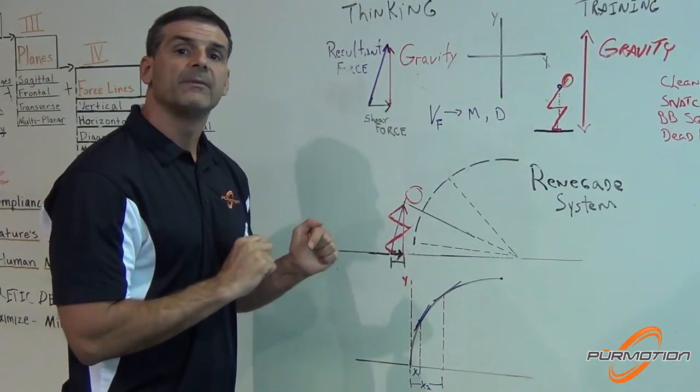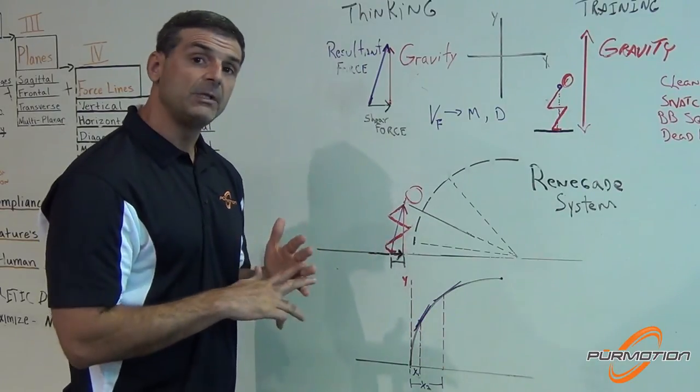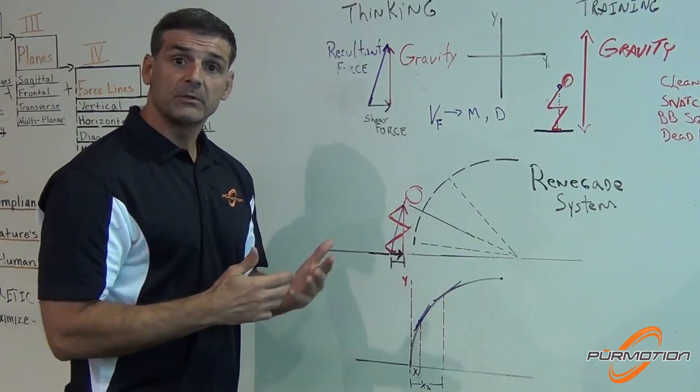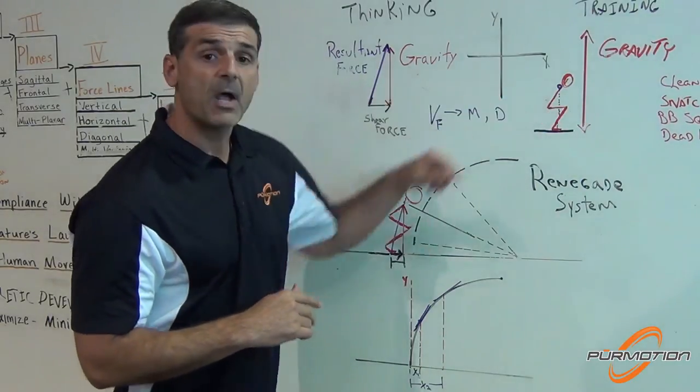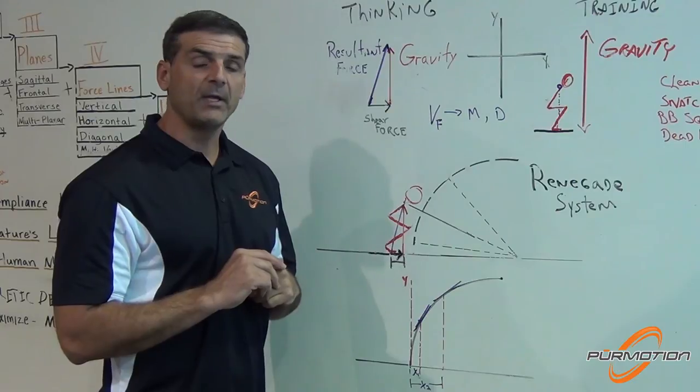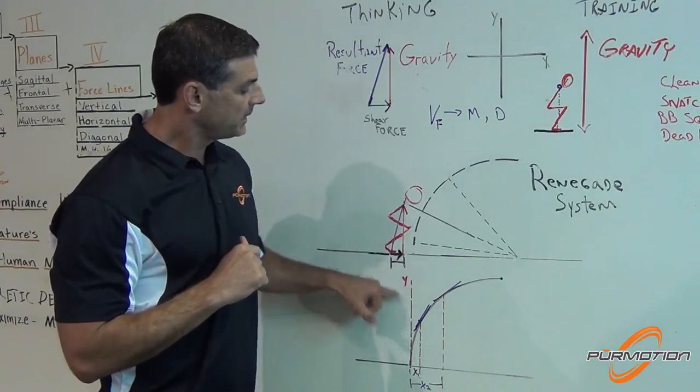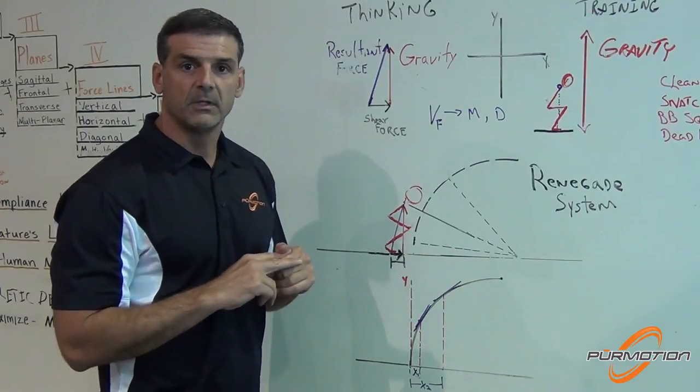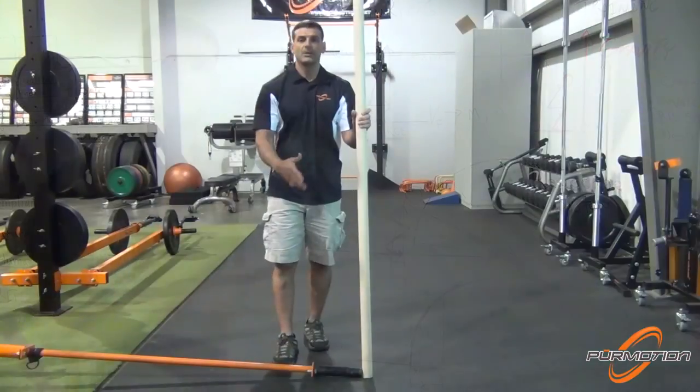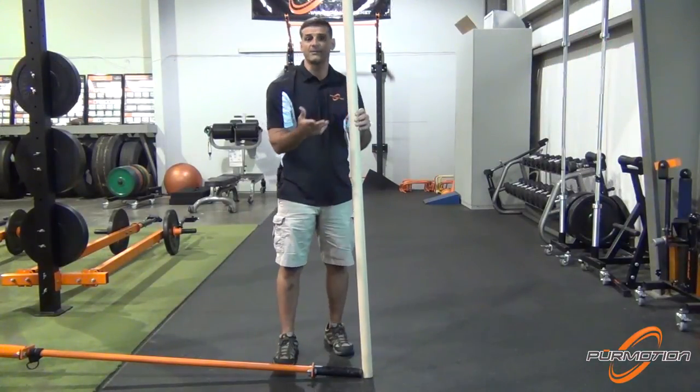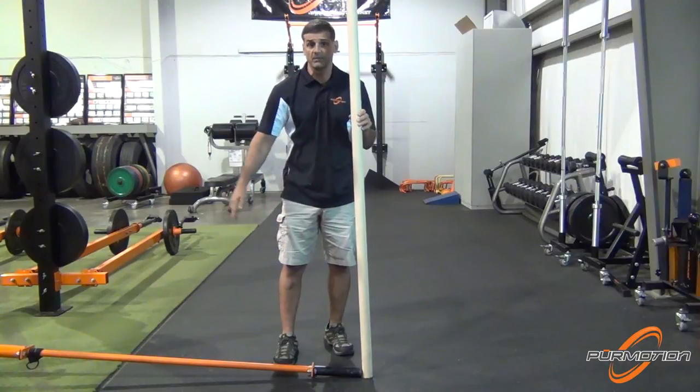Now I'm going to show you one of the practical approaches that we take to teach individuals, athletes, users that have been trained this way and how we can convert them or educate them in a snap to understand how to incorporate the second vector into their training and conditioning program. So here I have a dowel that represents the athlete or the user, and here I have just a traditional bar.